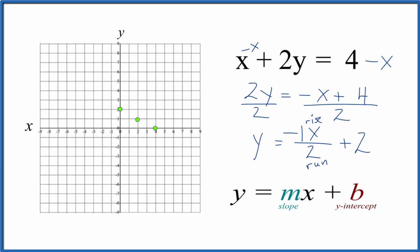You can see these are all in a line. Let's put a line through that. And then we can put arrows to show that it goes to infinity on the end here. And that's the graph for x plus 2y equals 4.